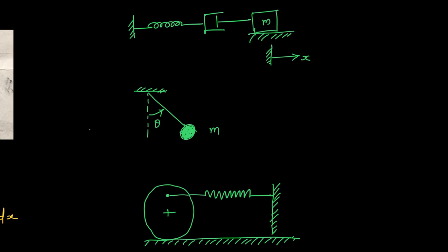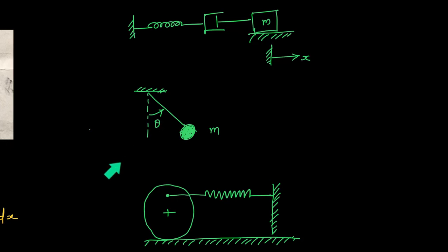Before we get into solving this problem, let me explain a few basic things. I will draw three different mechanical systems on the screen. All three are single degree of freedom systems, but there is an inherent difference. In the first case, the mass m undergoes pure translation. In case two, the mass m undergoes rotational motion about the hinge point O — it is pure rotation about that point.